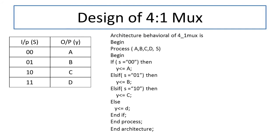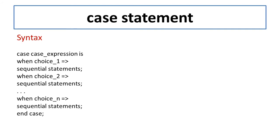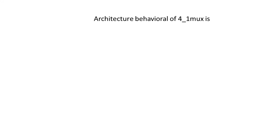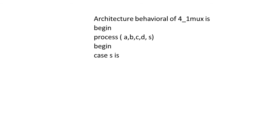Now let us look at the case statement. In multiplexers, encoders, decoders, and demultiplexers where select lines play a vital role, we can model them using case statement. The syntax is: case expression is; when first choice => sequential statement; when second choice => sequential statement; continuing until the last condition; then end case. Now for the 4-to-1 mux example: architecture behavioral of 4-to-1 mux is begin, process. Instead of if-else we write: case s is.